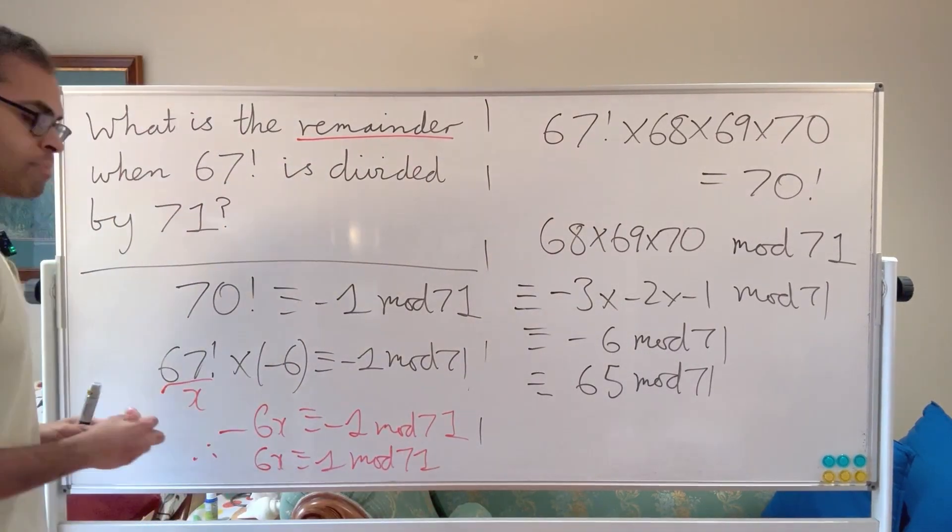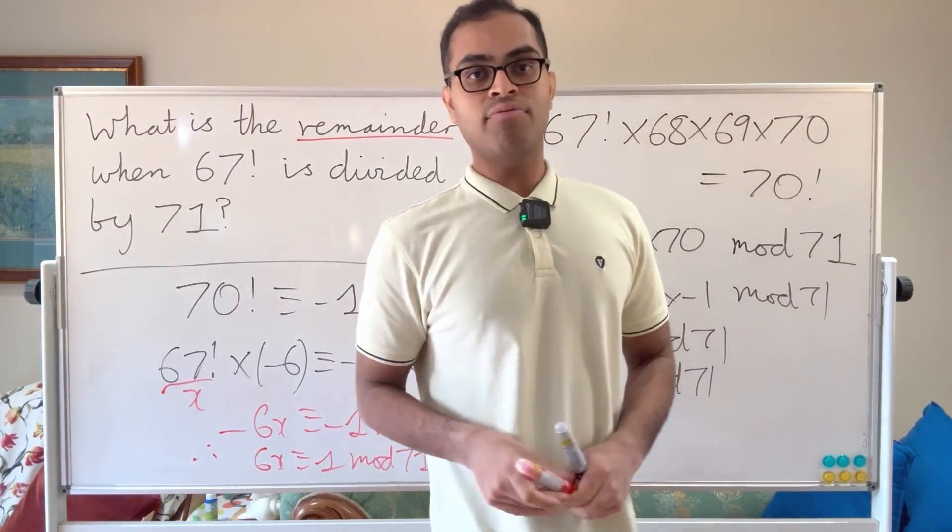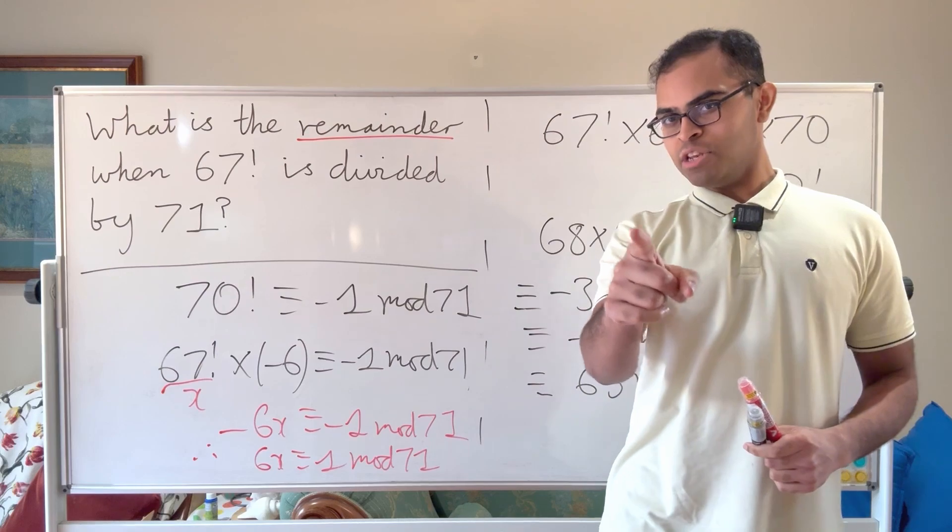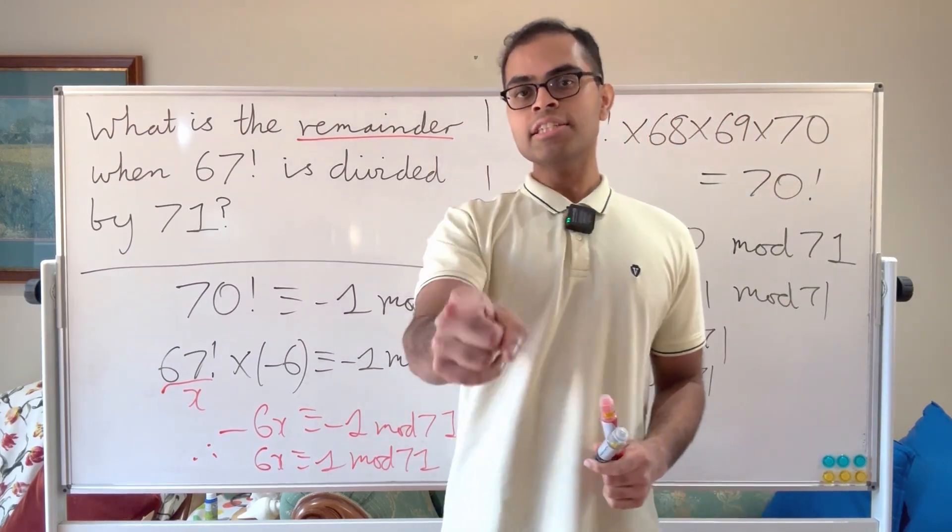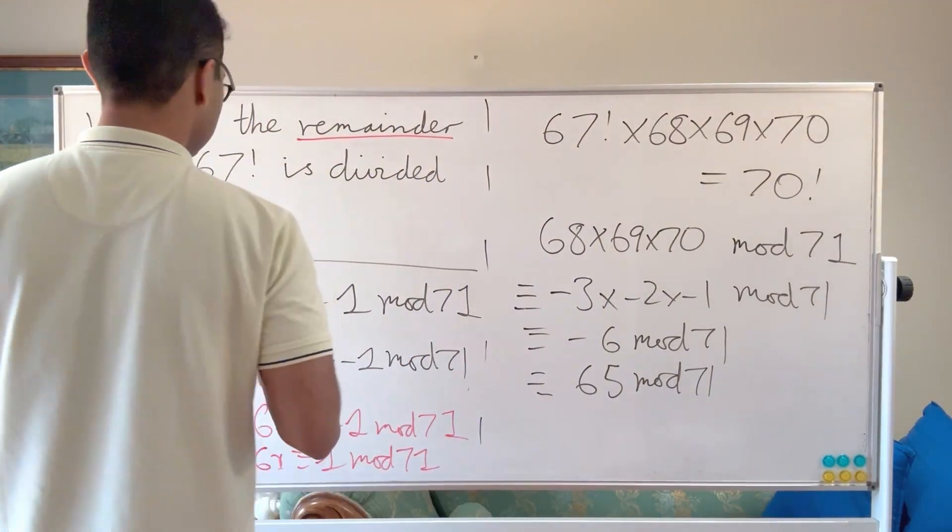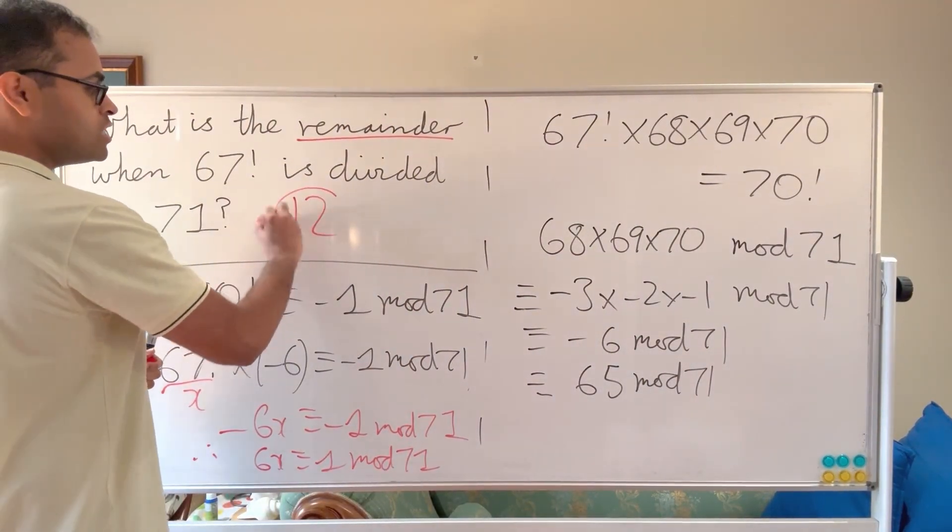So what number do I have to multiply by 6 to get a remainder of 1 when I divide by 71? That number is going to be—can you pause it and let me know?—it's going to be 12. 6 times 12 is 72, which is a remainder of 1 when you divide by 71. So therefore, the answer to this problem is 12. Simple as that.